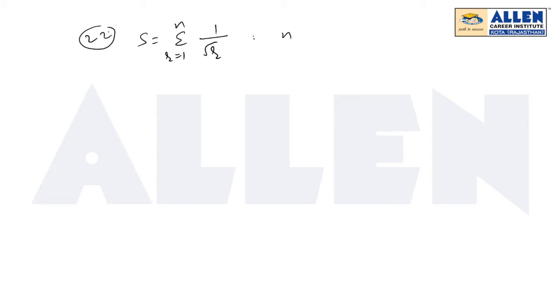Here n I am taking as 1599. Now let's take a general term 1 by root r, that is tr. So multiply 2 in the numerator and denominator. Now this can again be written as denominator: root r plus root r.